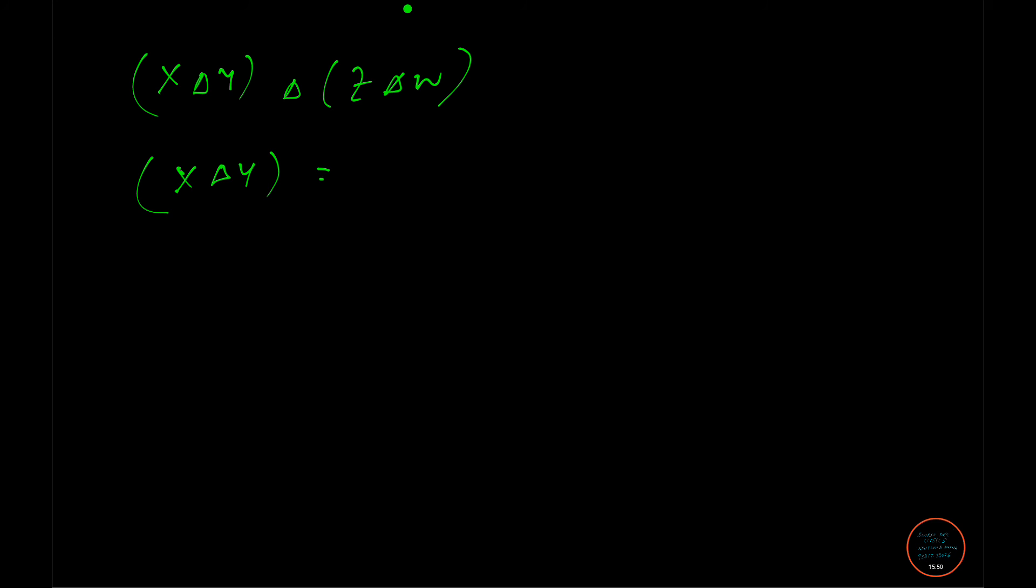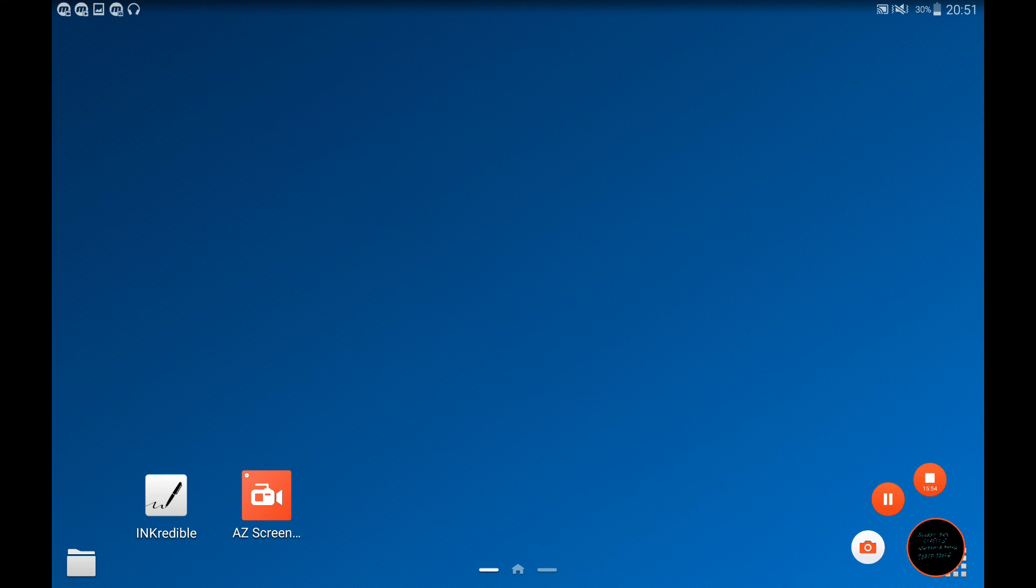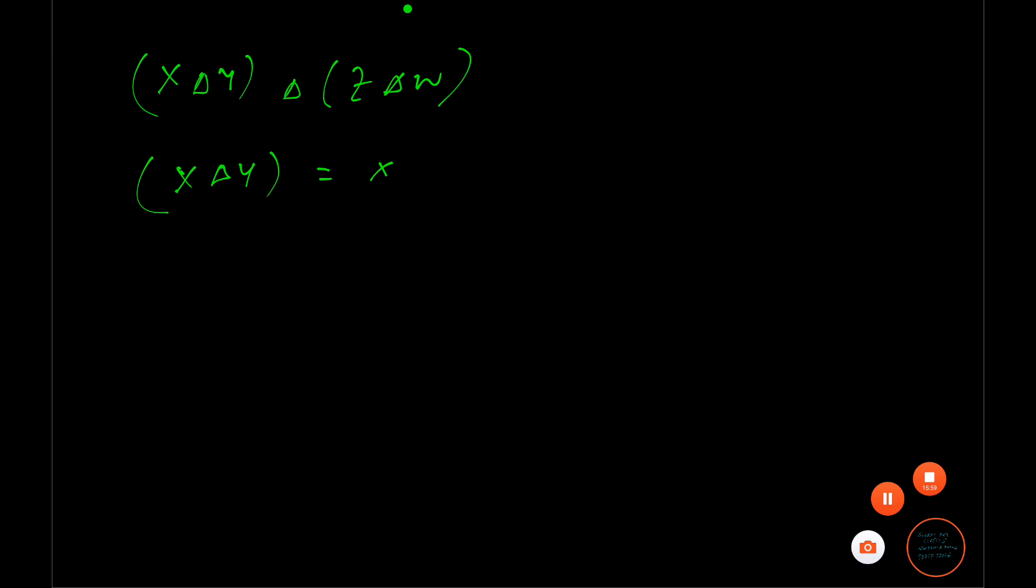So X delta Y will be the difference between X minus Y union Y minus X. Simply this. So here X minus Y union Y minus X you can calculate this part. What is X minus Y? Many of you don't have set actually in your classes or have done in the long back. So it creates sometimes a painful situation as well.